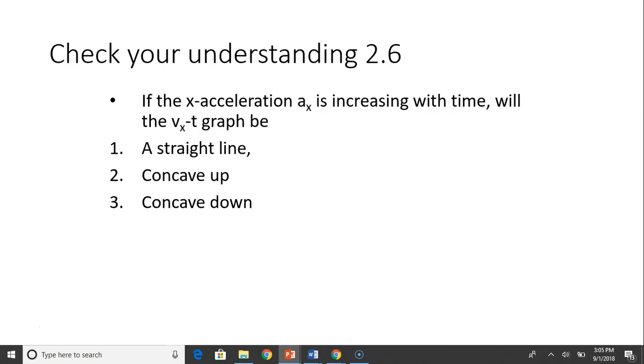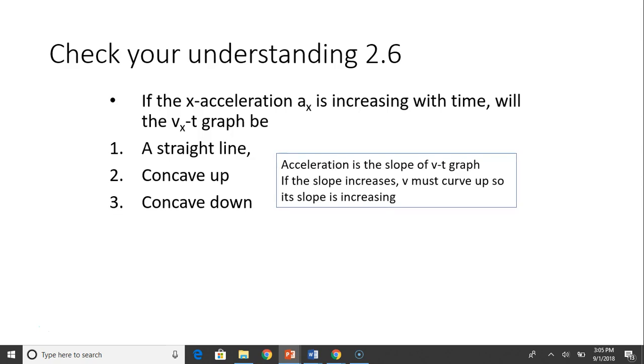Here is the check your understanding question. So if the x acceleration ax is increasing with time, will the vx(t) graph be straight line, concave up or concave down? Let's see. The acceleration is the slope of v(t) graph. So if acceleration is increasing, slope has to increase. If the slope is increasing, the graph has to curve up. So it has to curve up, concave up. So that is the answer.